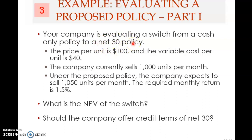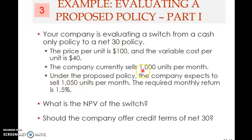The price per unit is $100, and the variable cost per unit is $40. The company currently sells 1,000 units per month. Under the proposed net 30 policy, the company expects to sell 1,050 units — an increase of 50 units per month. The required monthly return is 1.5%.